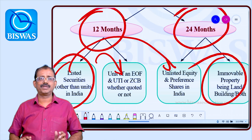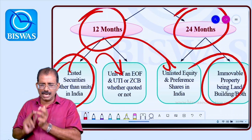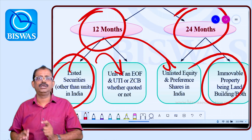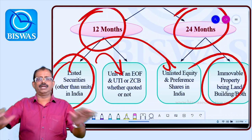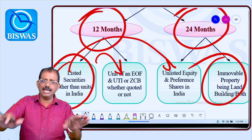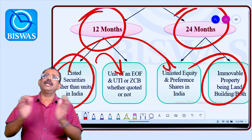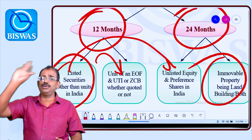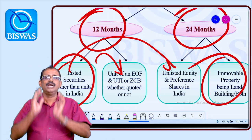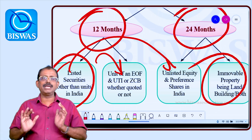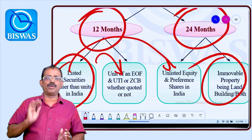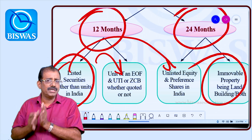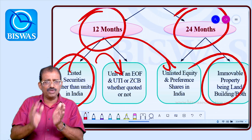Immovable property being land, building, or both — whether it is land alone, building alone, or land and building together — the holding period is 24 months, i.e., two years, to qualify as a long-term capital asset.